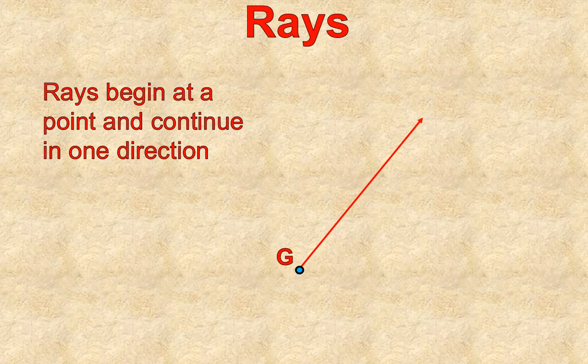Now, to name a ray, we have to put a second point on it, and then we would call this ray GH. So we start at the end of the ray here where it stops, and then our second point is along there. So this is the ray GH. We wouldn't call it the ray HG. We'd call it GH because it starts here and then continues on in that direction.